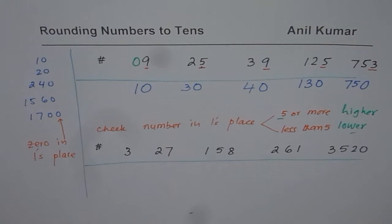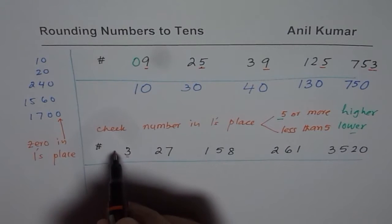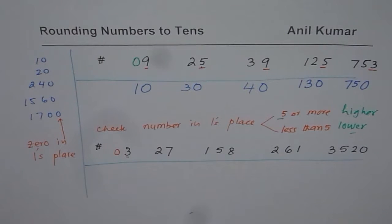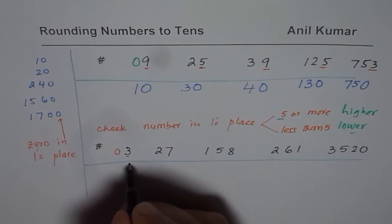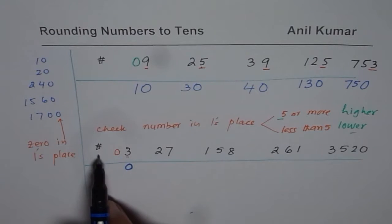Now we need to round to nearest tens. We'll check 1's place. 1's place here is less than 5, less than 5, and this number is 0. So it goes lower. And therefore, what do we get? Rounding to tens will lead us to just 0. 3 is closer to 0 than 10. So it rounds to 0. This is very important.